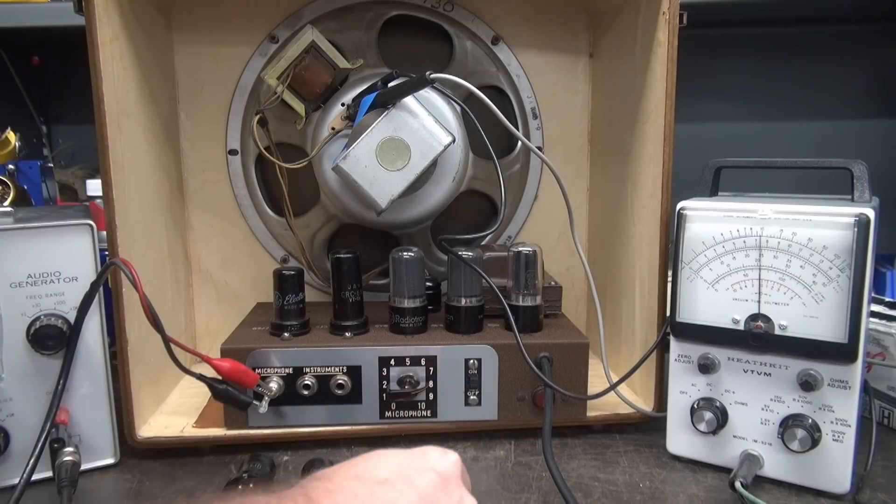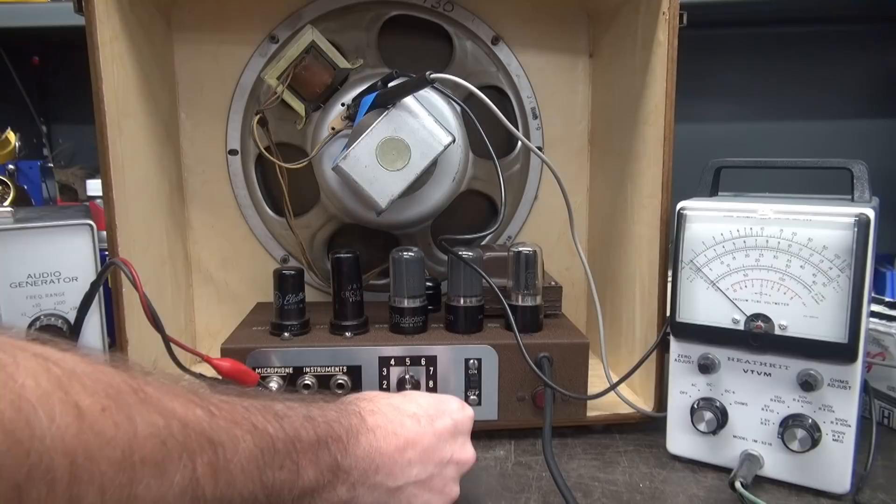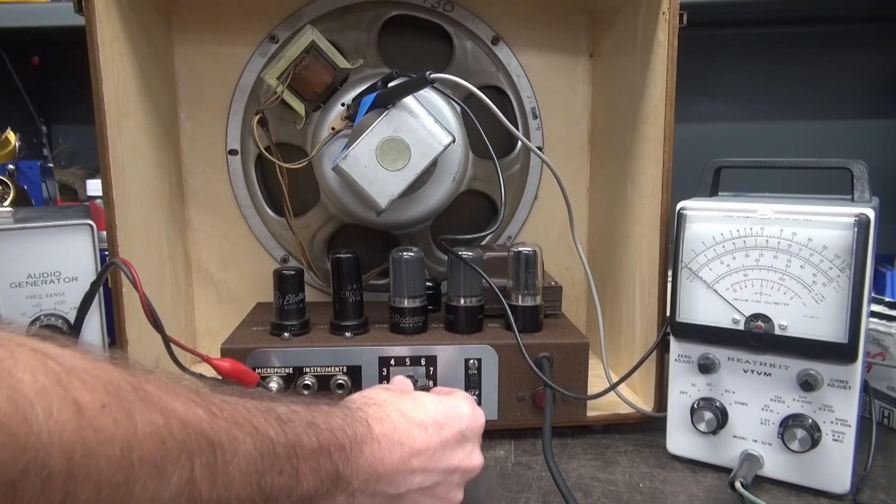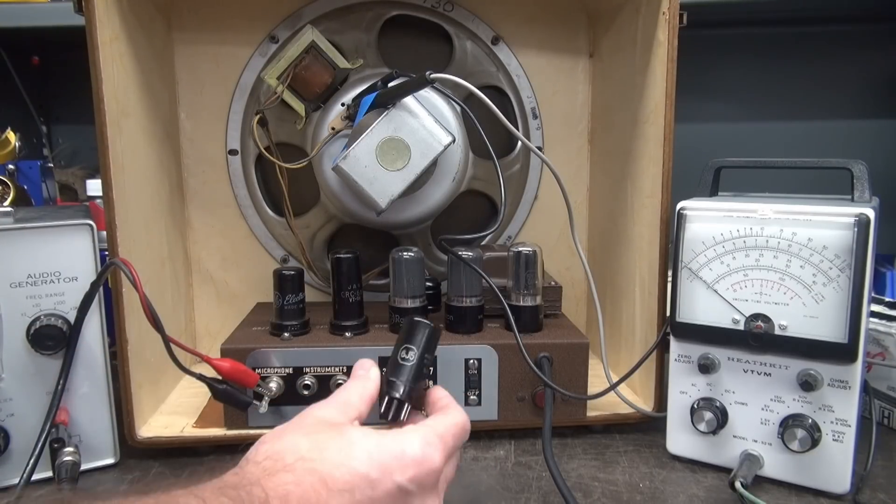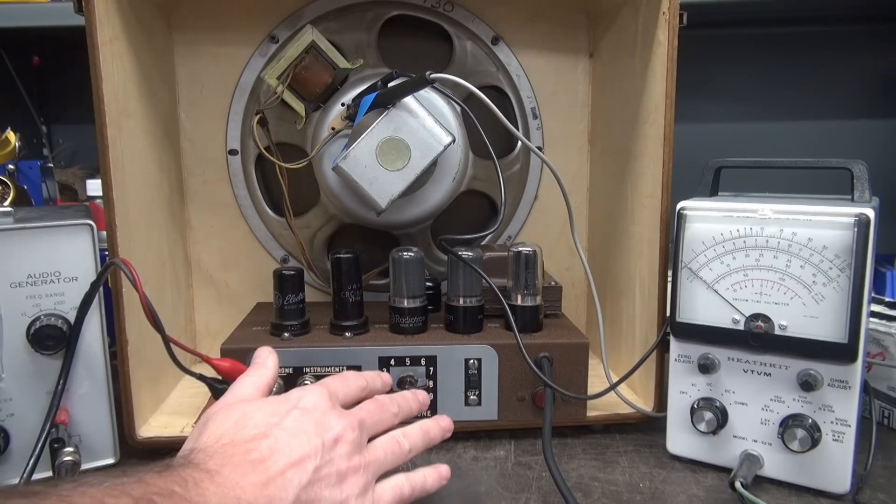All right. Now mid scale is about 8. So I am having to drive the 6N7 a little bit harder than the 6J5. So the next question would be how do these sound sonically? You know, like with a guitar.